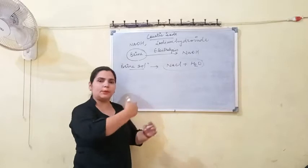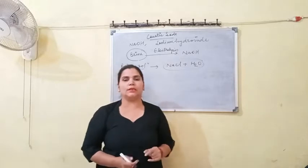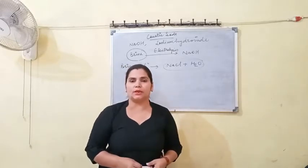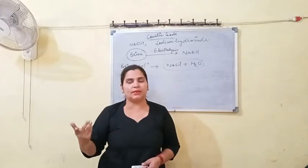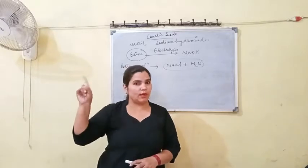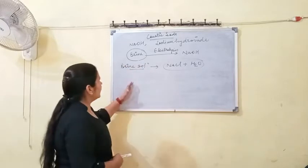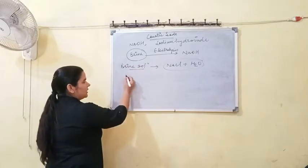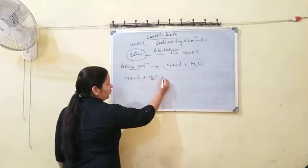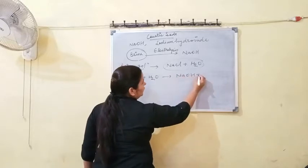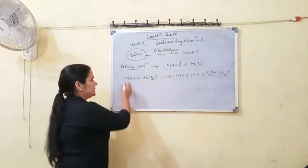In the electrolysis process, when NaCl is dissolved in H₂O, it forms NaOH with the evolution of chlorine and hydrogen gas. The balanced reaction for this manufacturing process is as follows.